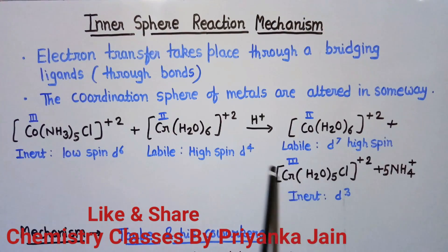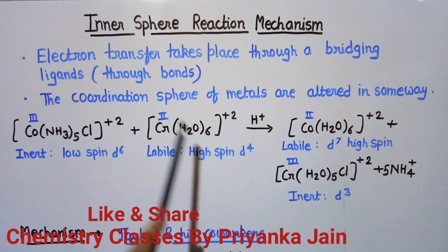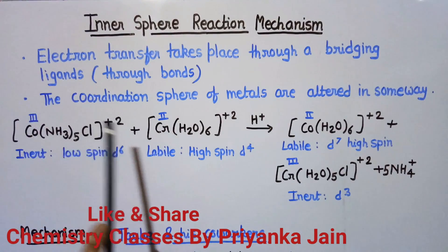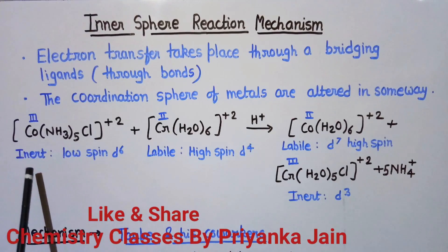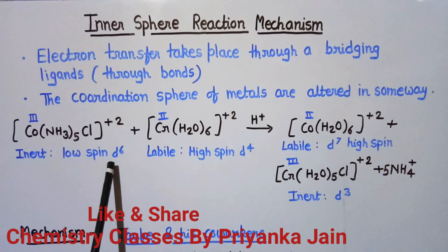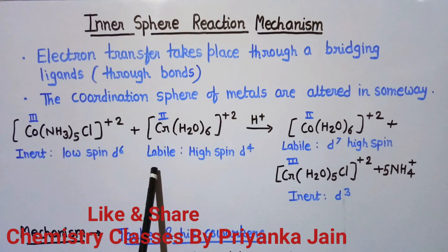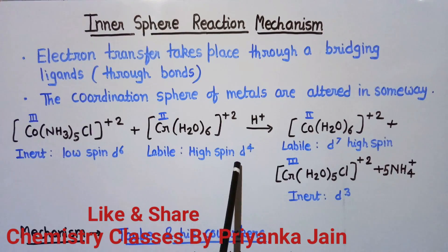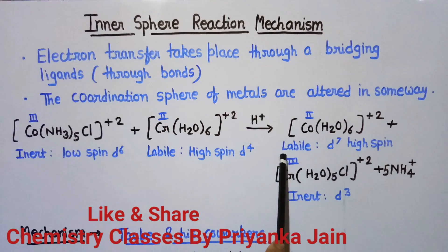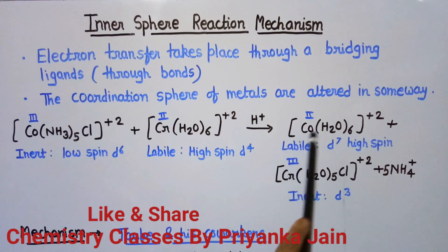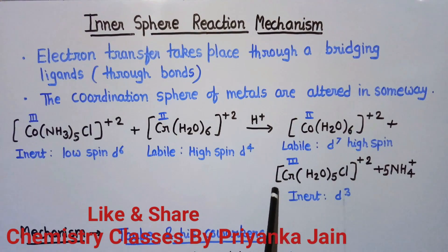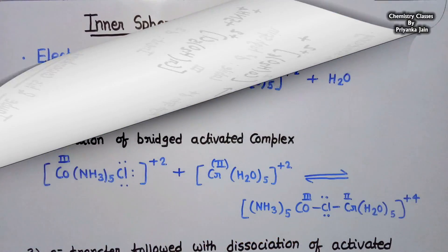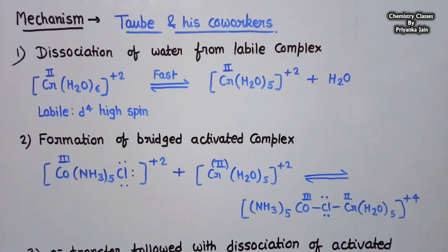The electron is transferred via the bridging chloride ligand. The cobalt complex was inert and is a low spin d6 complex, while the chromium complex was labile with a high spin d4 state. When the products are formed, the cobalt complex becomes labile with d7 high spin state, while the chromium complex becomes inert with the d3 configuration.